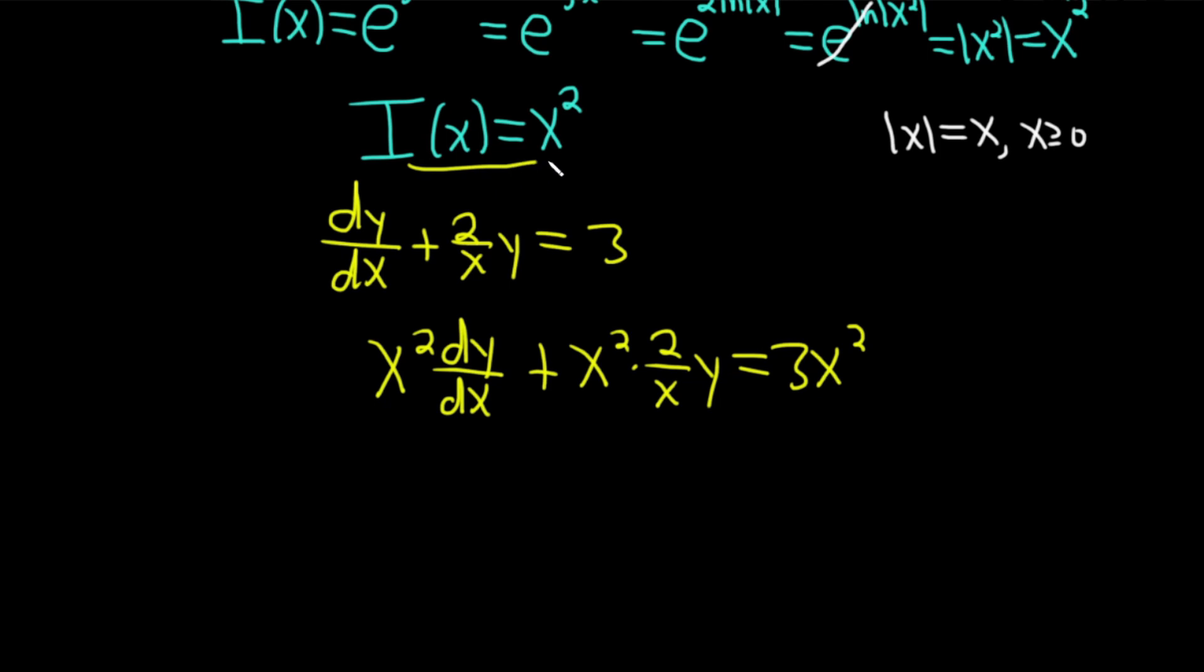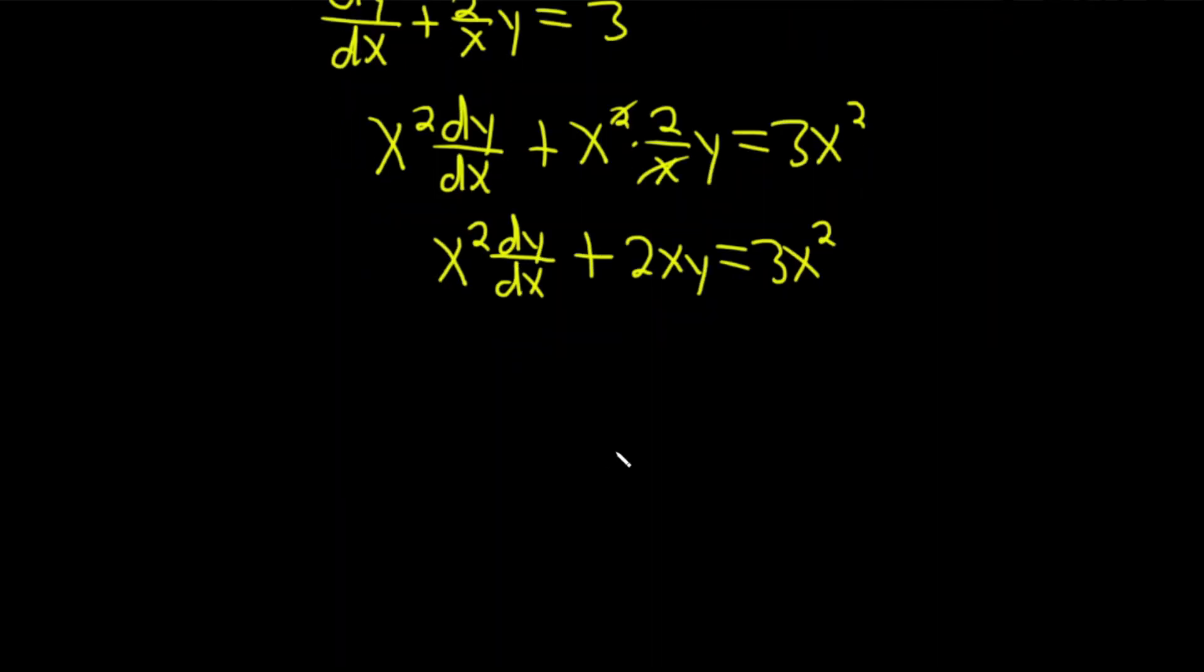Just taking I(x), which is our integrating factor, and multiplying it by each term in our differential equation. We have some cancellation, so let's handle that. x²(dy/dx) + 2xy = 3x². This is the most important part in this entire video. This is the part that everyone always gets stuck on. This is the key step.